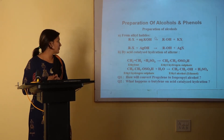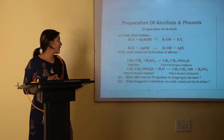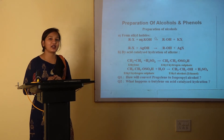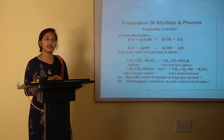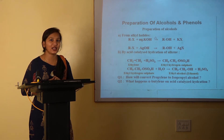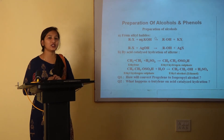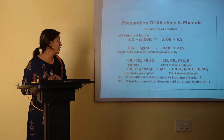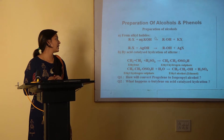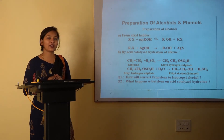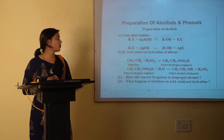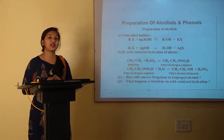First, how can we prepare alcohol from alkyl halides? Alkyl halides are alkyl groups attached with a halogen. So when that alkyl halide is reacted with aqueous KOH, it forms an alcohol, and the side product is KX.